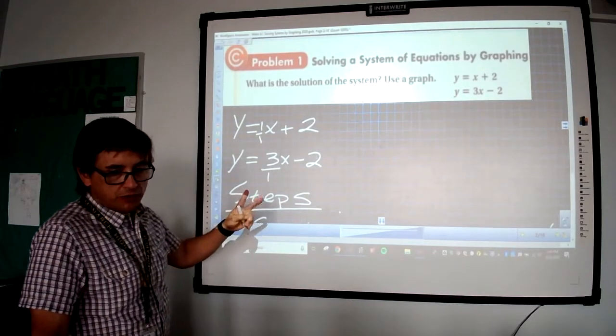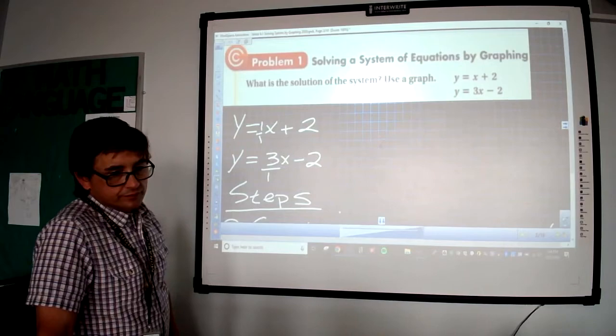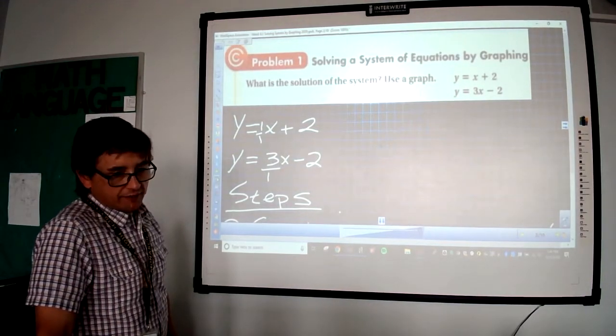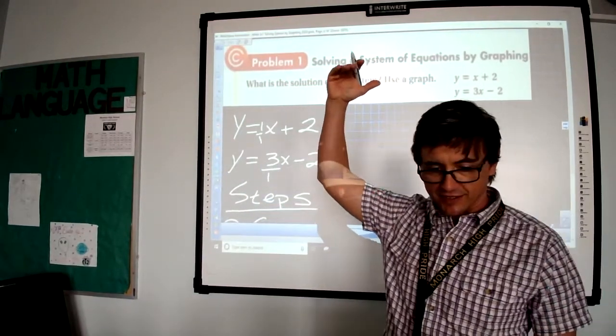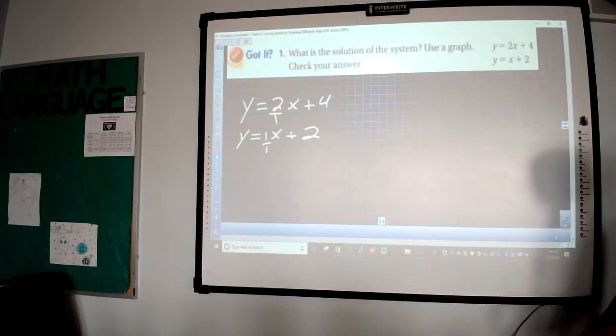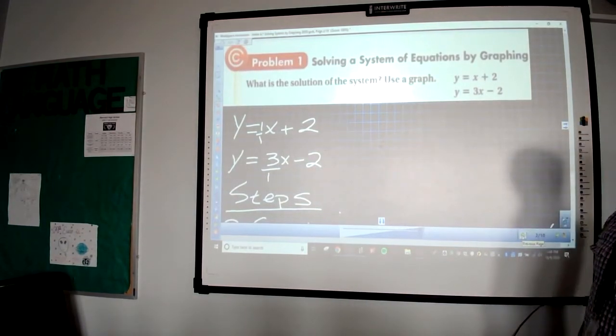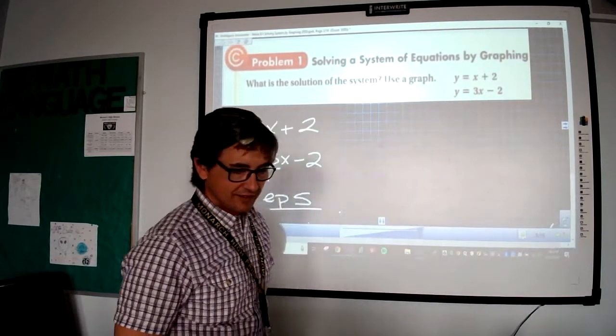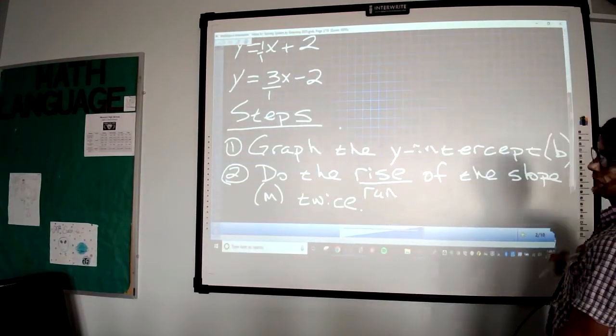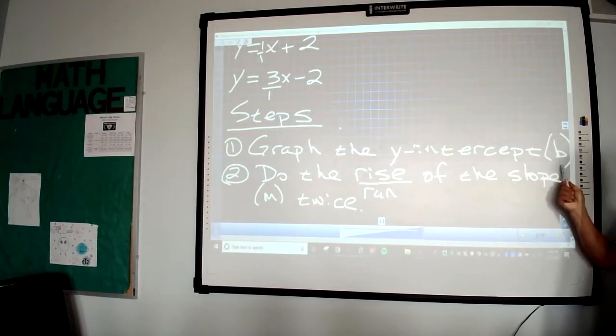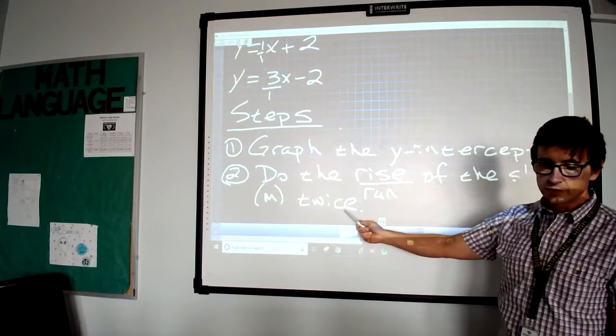Then we have some steps for graphing. Two whole steps. So steps for graphing. We're going to graph the y-intercept which is b in y equals mx plus b, and then we're going to do the rise over run of the slope which is m in that equation two times, so twice.